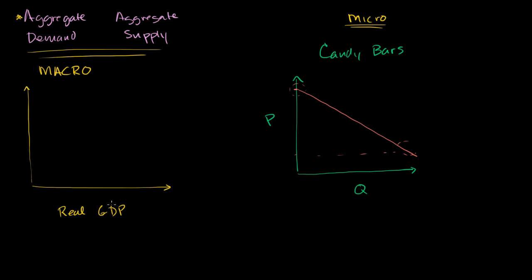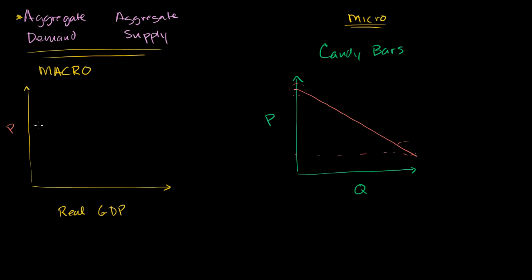On the vertical axis, we plot price level — not the price for one good or service like candy bars, but the general level of prices in the economy, perhaps a weighted average. We will see that this is a downward sloping curve. Economists will tell you it looks like that based on certain theories, and they like it because it starts to explain economic cycles based on their models.